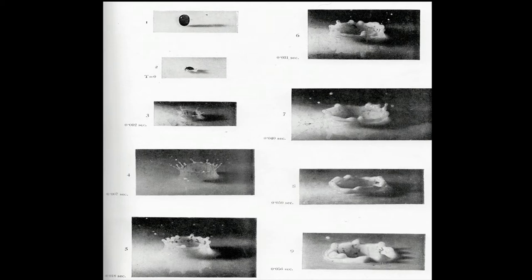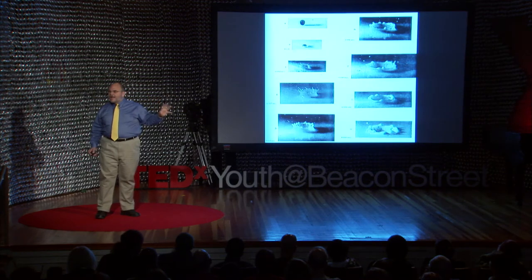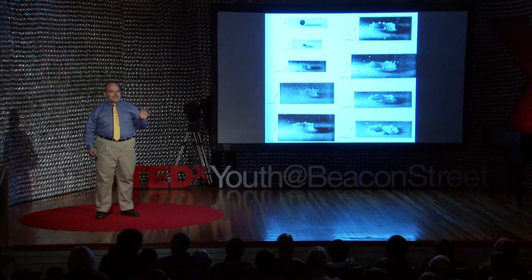He didn't use the state-of-the-art 8,000 frames-per-second high-speed video camera that I had for the videos I showed you. Rather, he was using a film camera, a strobe, and some simple electronics to synchronize the strobe so that on the first drop, the strobe flashed to show the drop about to hit, and on the second drop, the strobe flashed a little later to show the process further along — and on and on. What you're seeing are nine different photos of nine different drops with the strobe going off at different times.